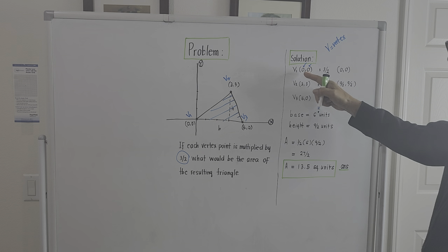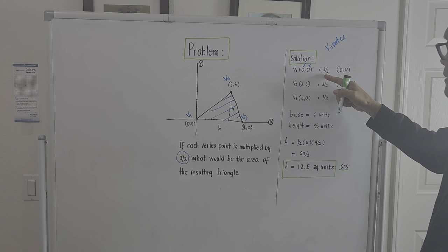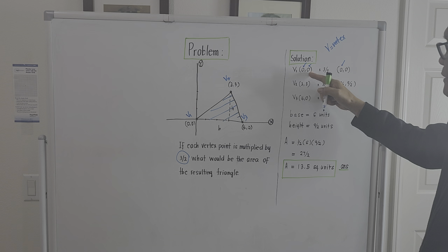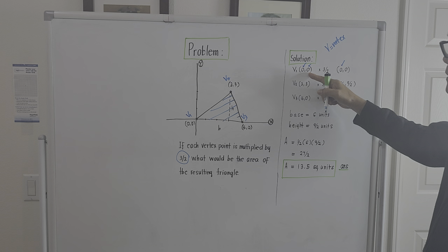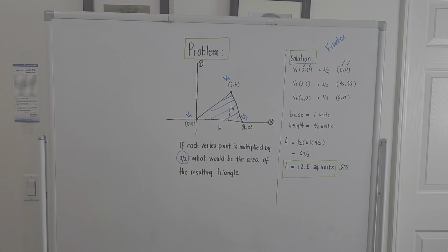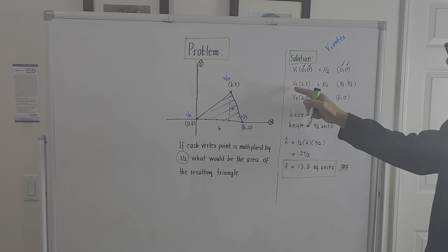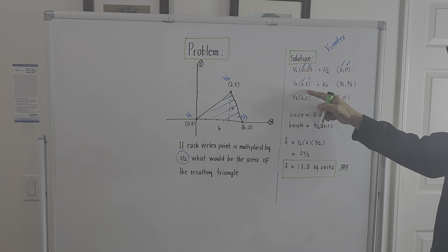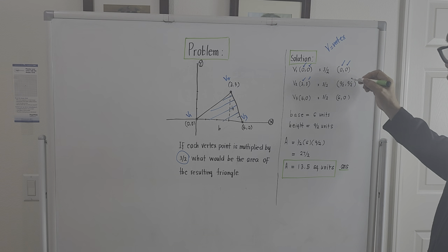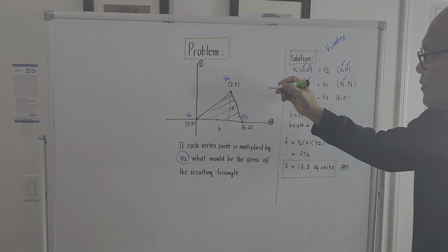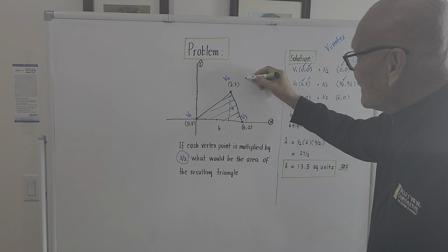If we try to multiply the abscissa of vertex one by three halves, it will still be zero. The ordinate is also zero, so multiplied by three halves it remains zero. For vertex two, the coordinates are (3, 3). Multiplying three by three halves gives nine halves — so the new abscissa will be nine halves, or 4.5.